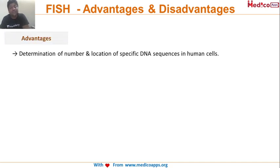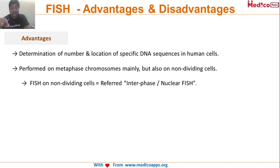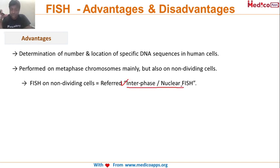The major advantage of FISH is determination of the number and location of specific DNA sequences in human cells. It is performed mainly on metaphase chromosomes but can also be done on non-dividing cells — this is a very major advantage. FISH done on non-dividing cells is called interphase FISH or nuclear FISH. This is a very important question: FISH is generally done on dividing cells but can also be done on non-dividing cells.